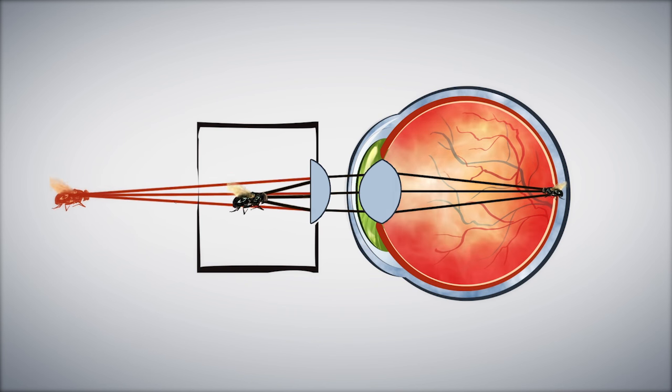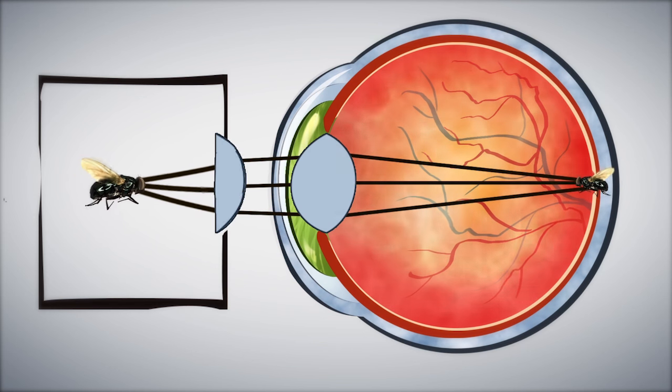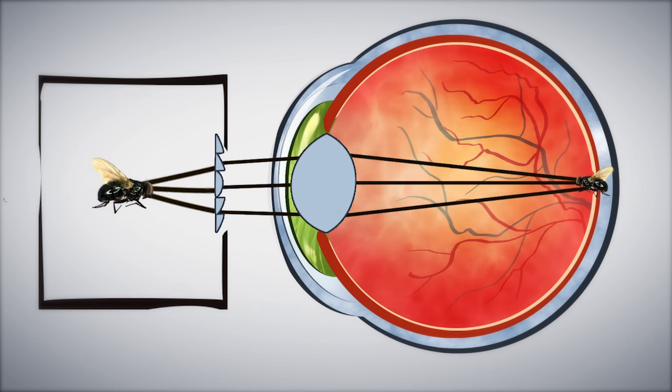To make the headset lenses thinner and lighter, some VR headsets use Fresnel lenses, which are lenses with the same curvature as regular lenses, but they are segmented.